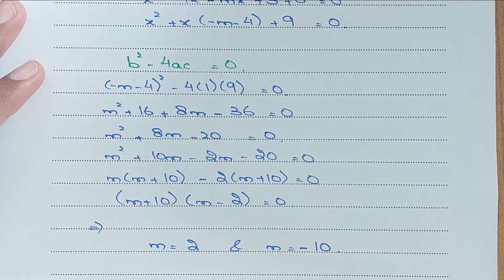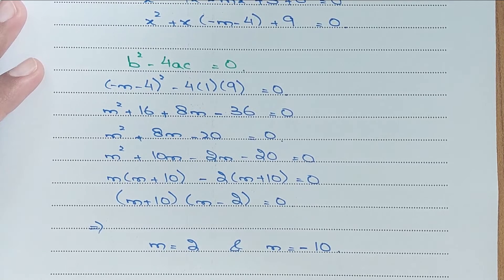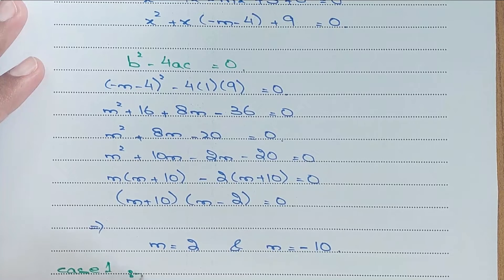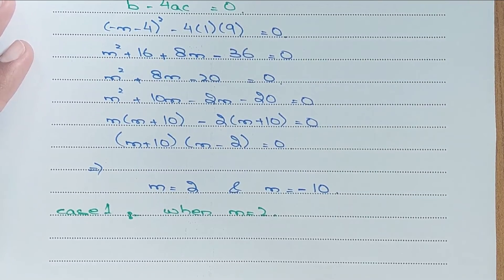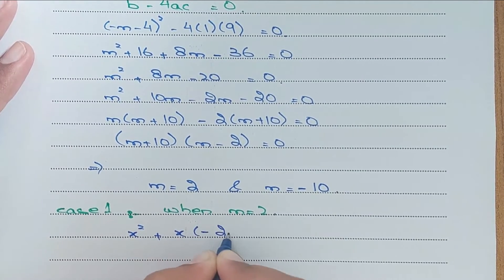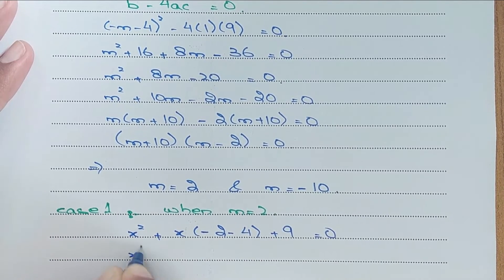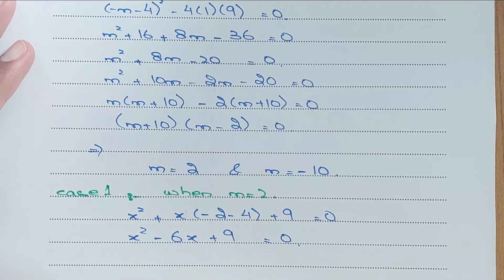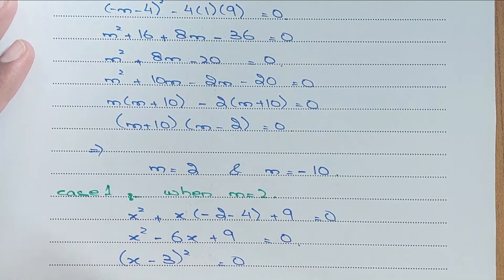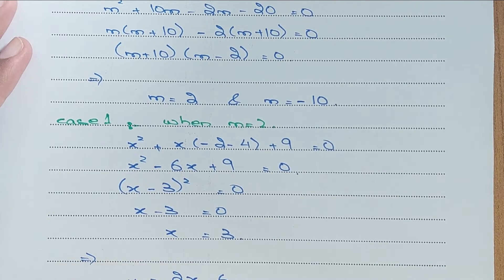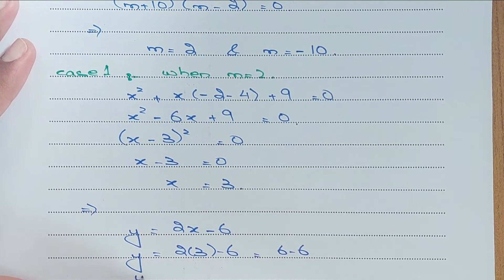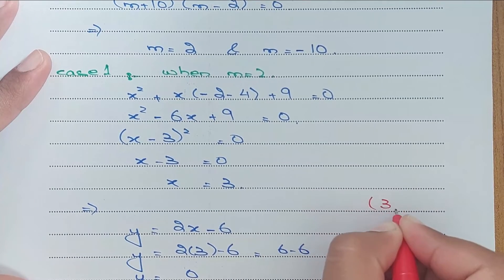For case 1, when m equals 2: substituting into x² minus (m + 4)x plus 9 equals 0 gives x² minus 6x plus 9 equals 0, which is (x − 3)² equals 0, so x equals 3. Substituting into the line y equals 2x minus 6: y equals 6 minus 6 equals 0. So the first point of tangency is (3, 0).